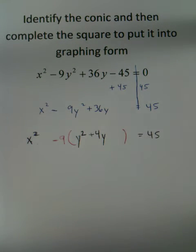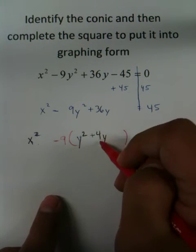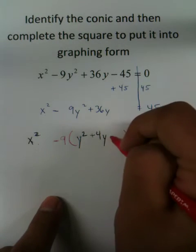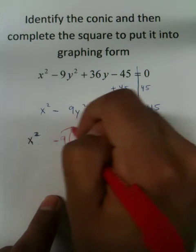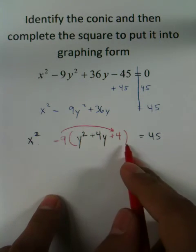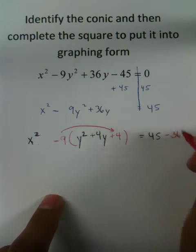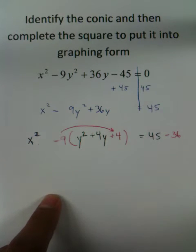Once we cut this in half and square it, we're going to add 4 right here. But because this is inside the quantity, we're actually subtracting 36 because negative 9 times 4 is minus 36.